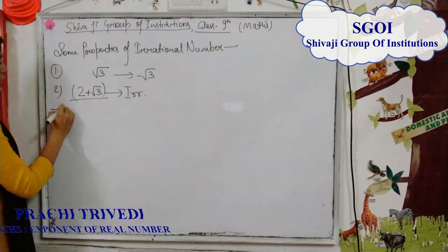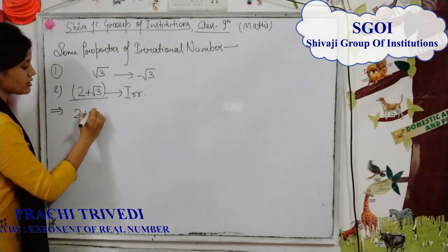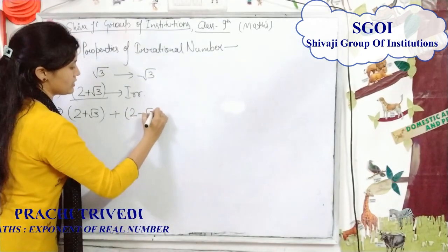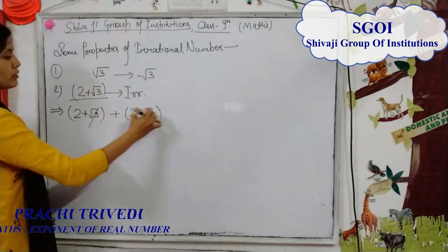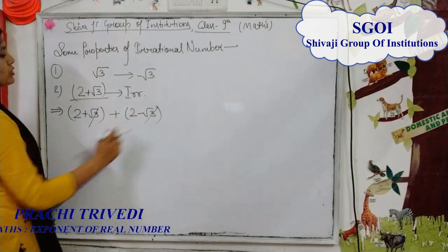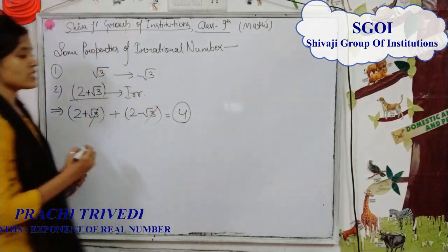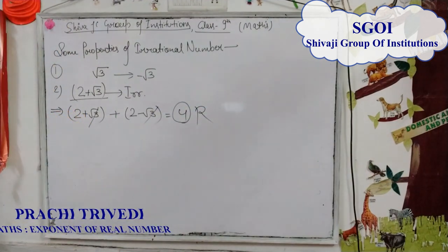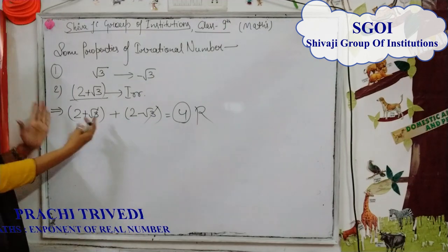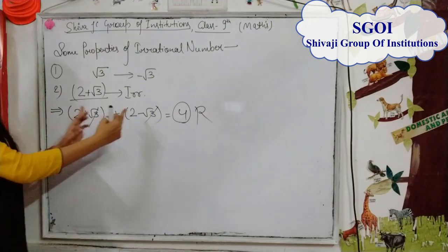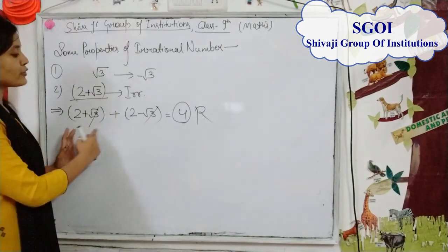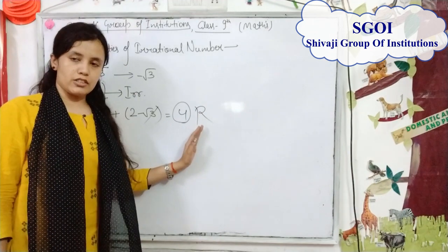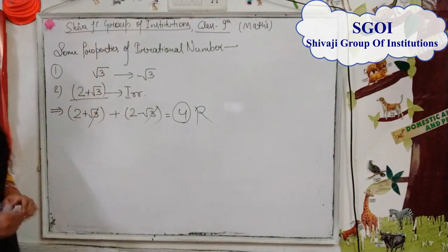But students, if we add (2 plus root 3) plus (2 minus root 3), then root 3 and minus root 3 cancel, and we get 4, which is a rational number. It means the sum of two irrational numbers need not be irrational — the sum of two irrational numbers can be rational.